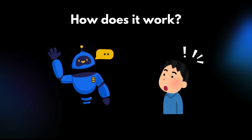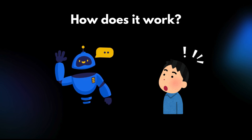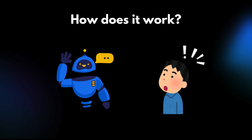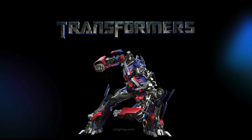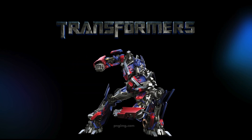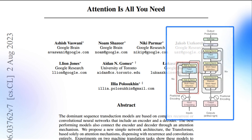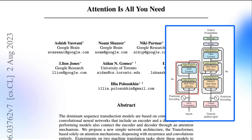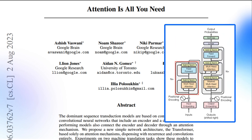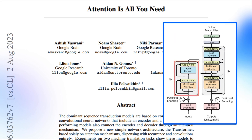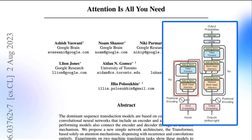But how does Generative AI work under the hood? Let's break it down. At the heart of modern Generative AI is a powerful architecture known as Transformers. Introduced in the seminal paper 'Attention is All You Need', Transformers have revolutionized how AI models process data.